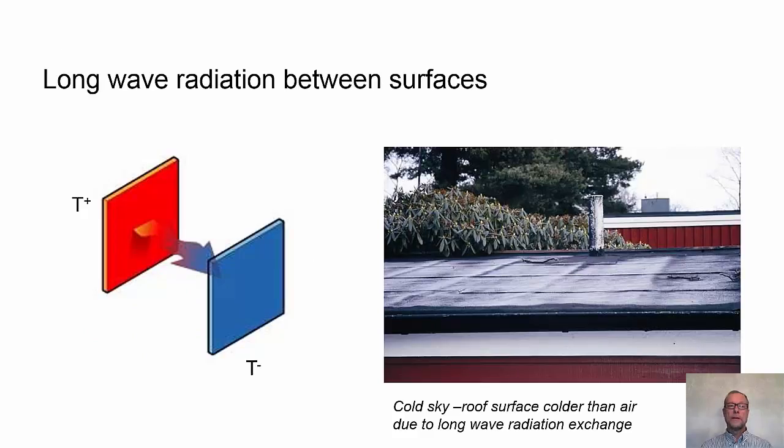The other part of radiation is the long wave radiation that we work with quite a lot in building physics. It's radiation between two surfaces, and here we have an example with the red warm surface and the blue surface. Both surfaces are emitting long wave radiation, but the red one emits more, so there will be net transfer of solar radiation from the red to the colder blue surface.